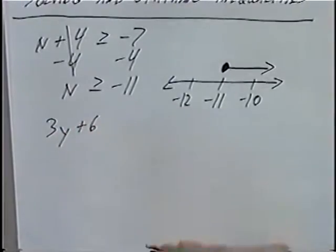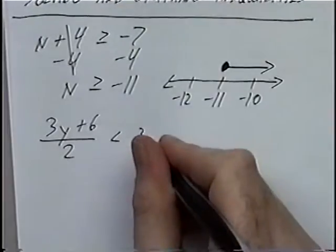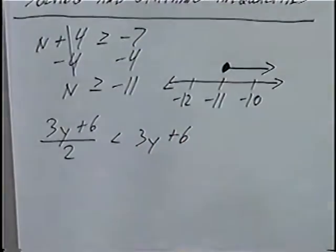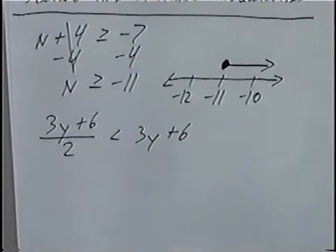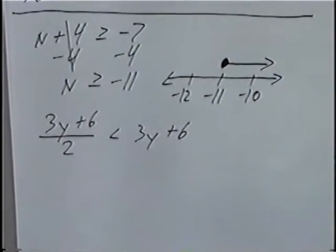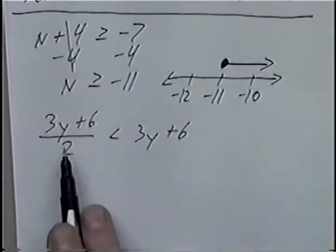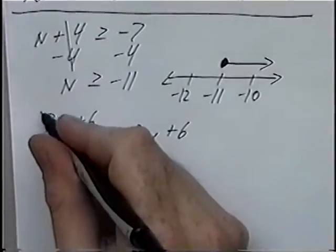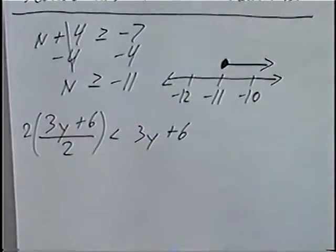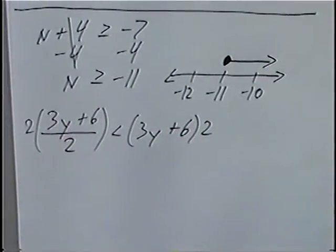Second and last question for this section: (3y + 6) divided by 2 is less than 3y + 6. Solving this inequality — we have variables on both sides, so we want to move them to one side. We also have a fraction containing variable y, so we can eliminate that fraction. We multiply both sides by 2, which cancels the fraction on the left.